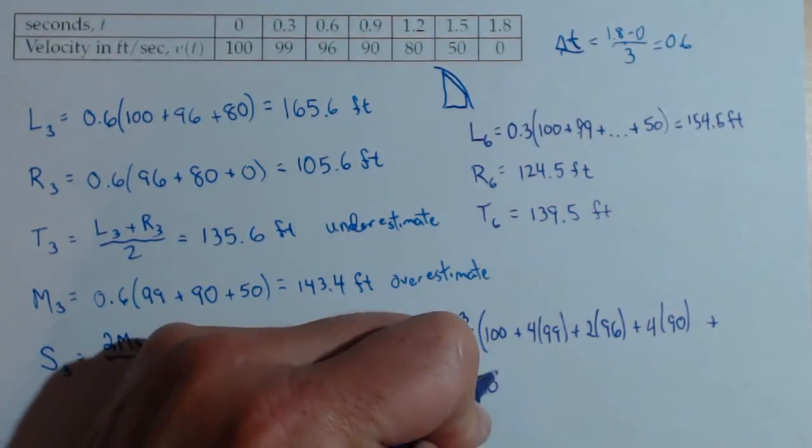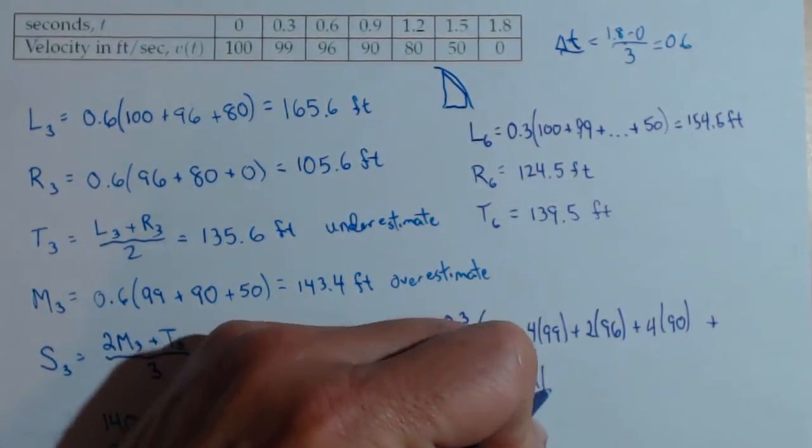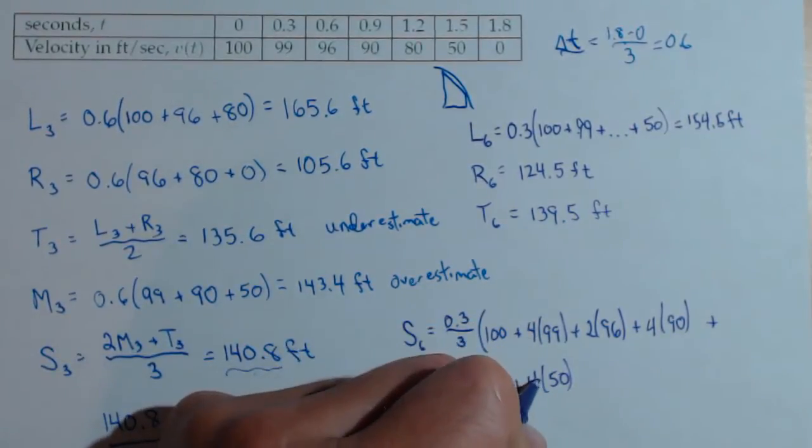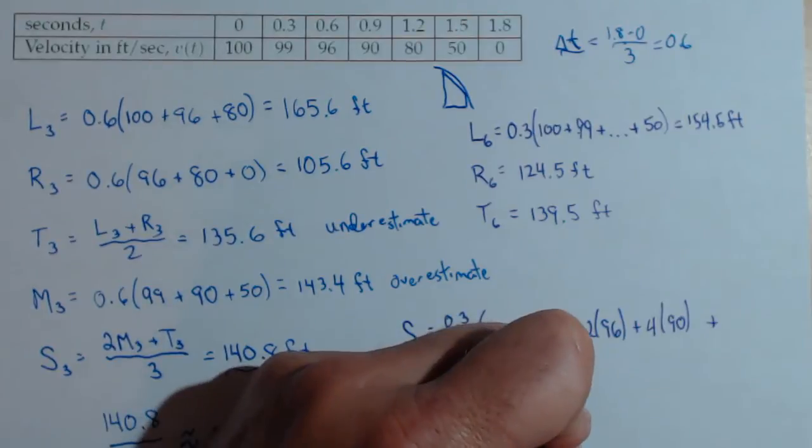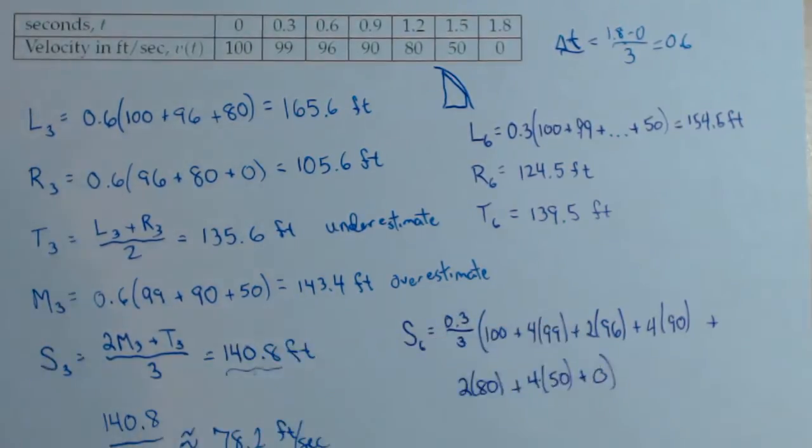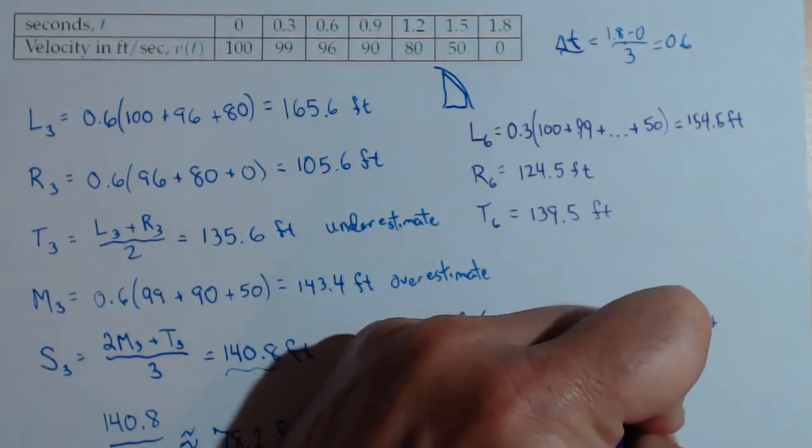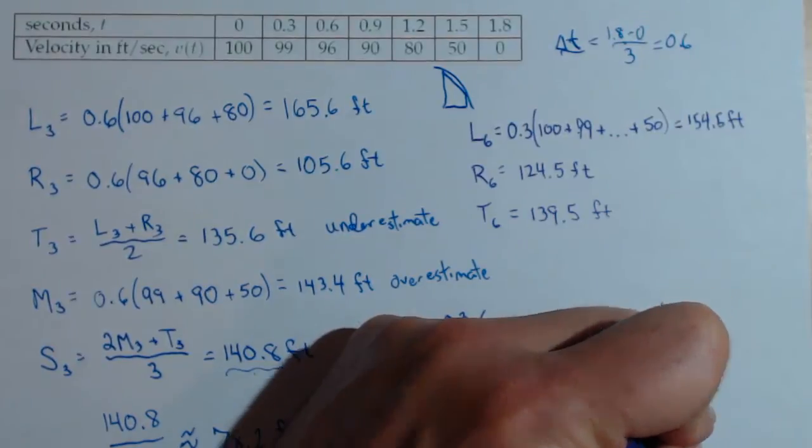Plus, now it goes back to two. So two times 80. Plus four times 50. So you'd always be on a four before you go to the last individual one. Plus zero. So this will give us Simpson's rule. Which, if you calculate this out, comes out to be 140.8 feet.